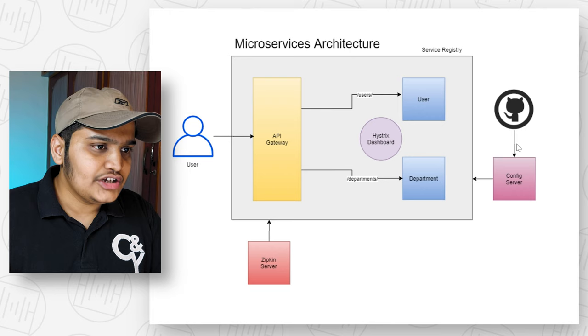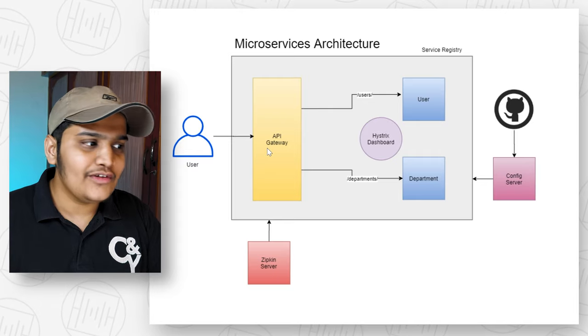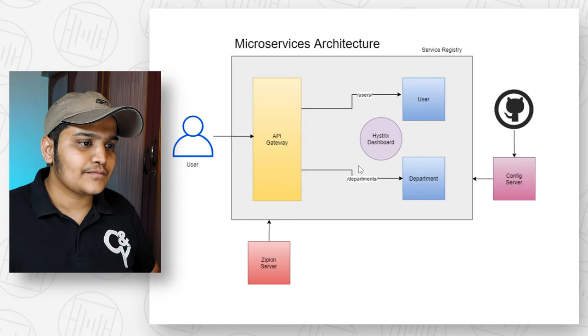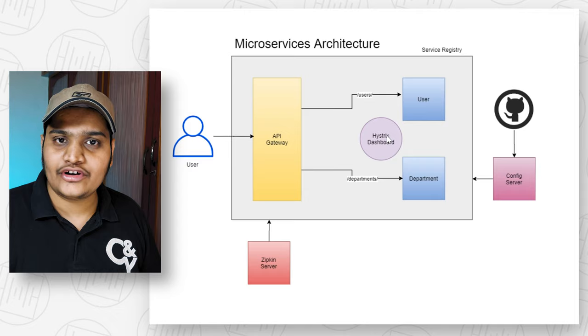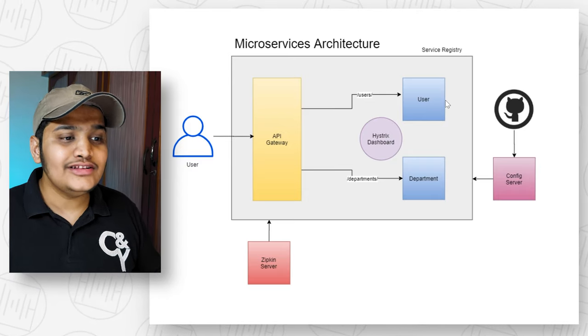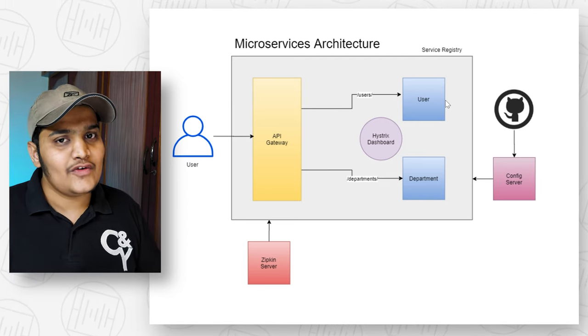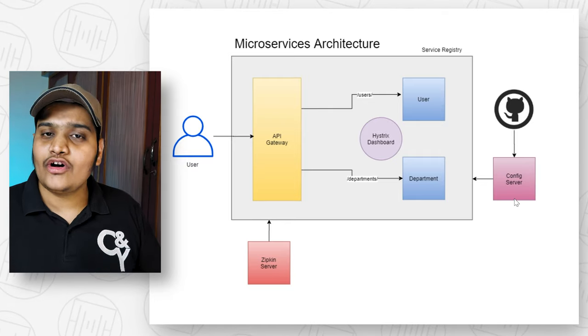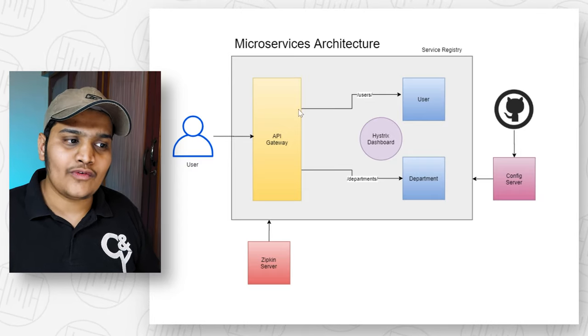Our application is ready to deploy in the Kubernetes cluster, but we need to make a few configuration changes. Let's recap our architecture: we have a user service and department service, both connected through an API gateway. Users access the API gateway directly. We have a Hystrix dashboard showing service resilience metrics, all services are registered to our service registry, we have a Zipkin server, and a config server connected to our GitHub repo where configuration files are stored and served to the entire application.